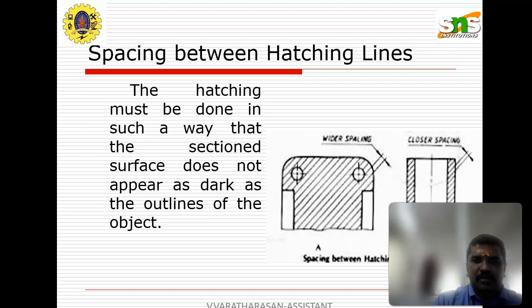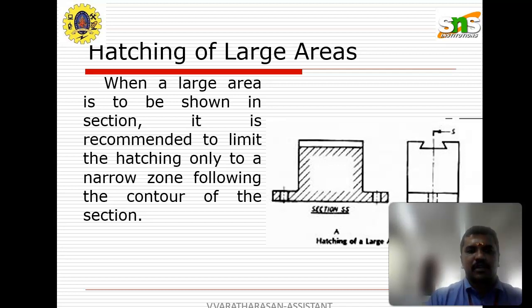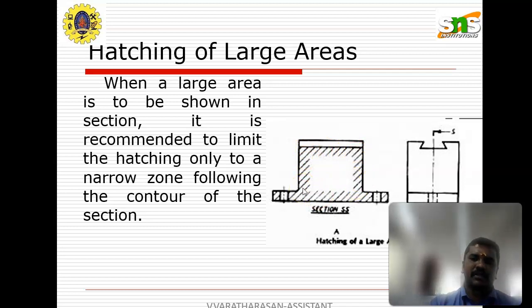The sectioned surfaces should not appear as dark as the outlines of the object. Compared to the outline, the sectional line thickness should be somewhat less. When a large area is to be shown in section, it is recommended to limit the hatching only to a narrow zone following the contour of the section. In this diagram, where there is a larger surface, we use hatching along the contour surfaces.